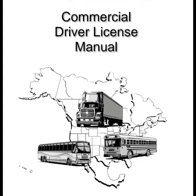2.1.3 What to Look For. Tire problems: too much or too little air pressure; bad wear. You need at least 4/32nds of an inch tread depth in every major groove on front tires, and 2/32nds of an inch on other tires. No fabric should show through the tread or sidewall. Look for cuts or other damage, tread separation, dual tires that come in contact with each other or parts of the vehicle, mismatched sizes, radial and bias ply tires used together, cut or cracked valve stems. Regrooved, recapped, or retreaded tires on the front wheels of a bus are prohibited.